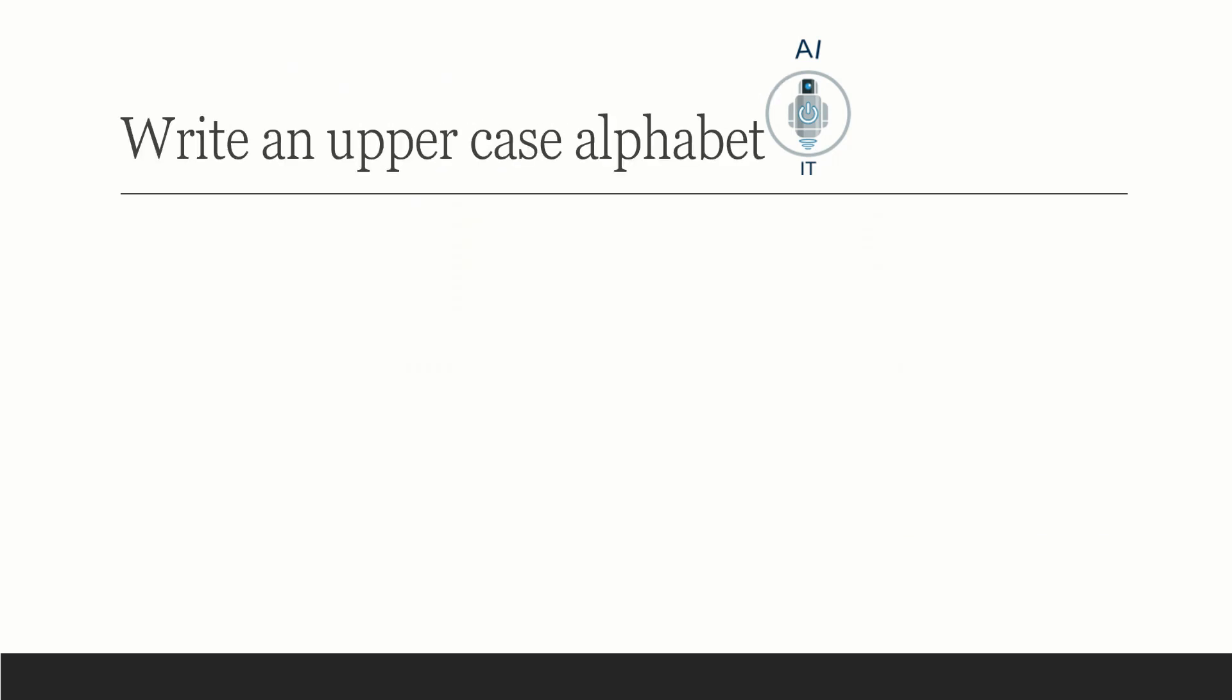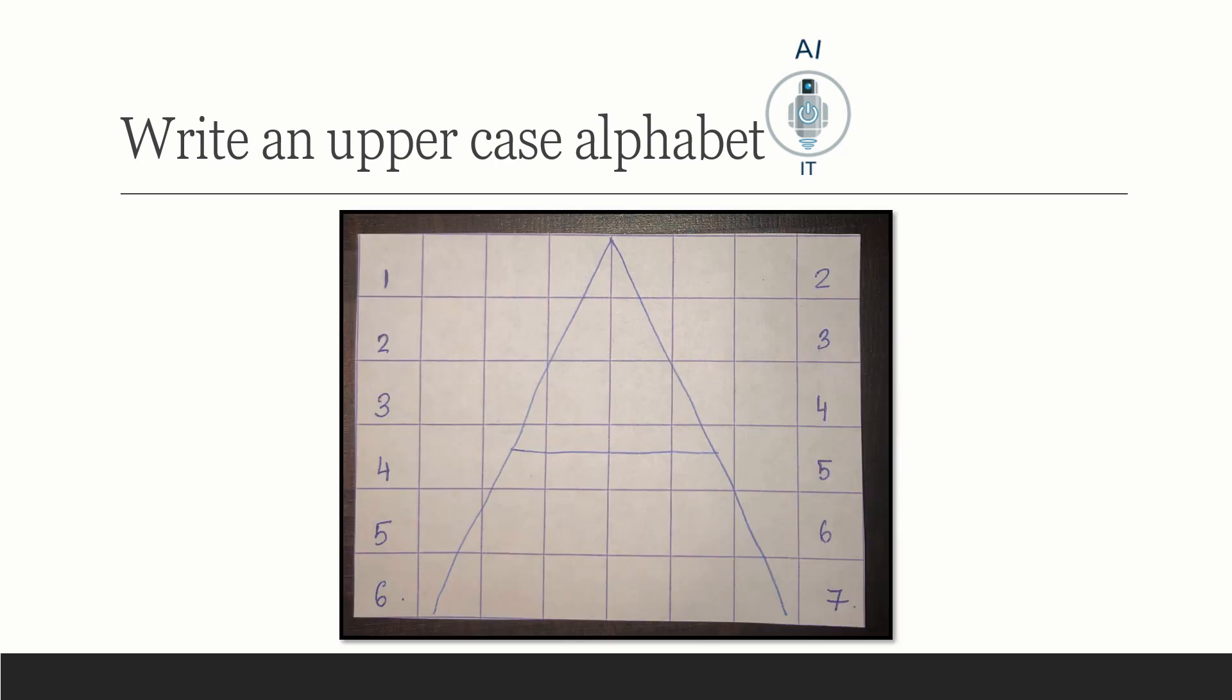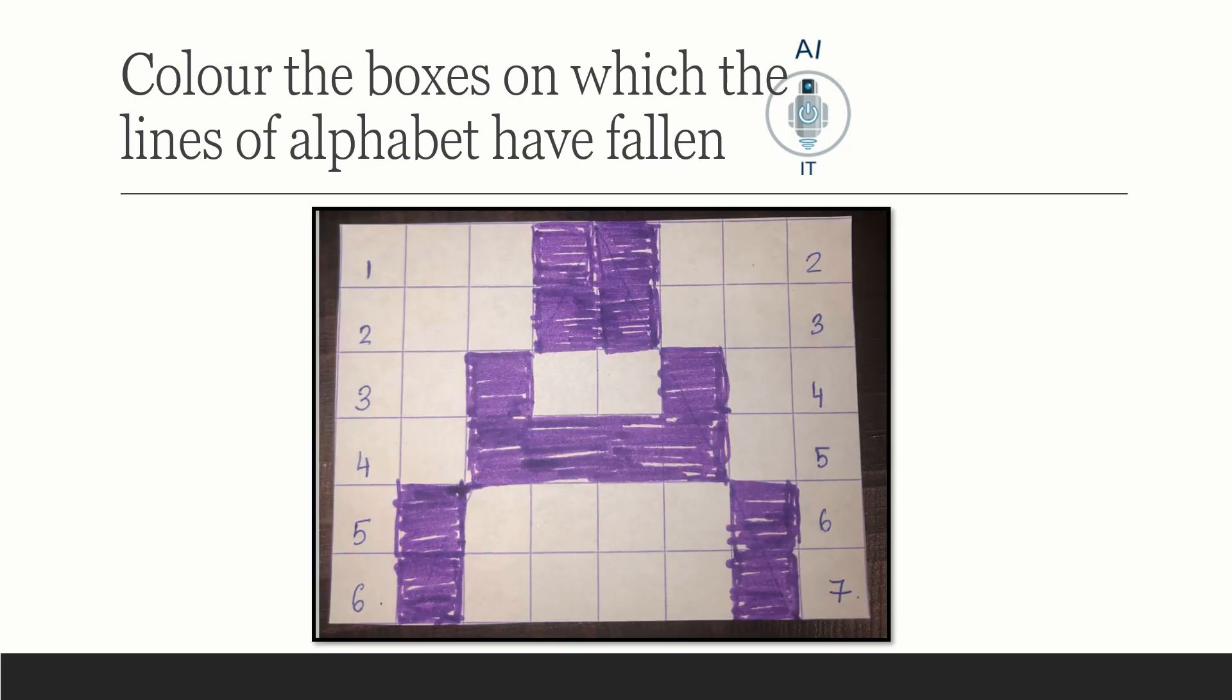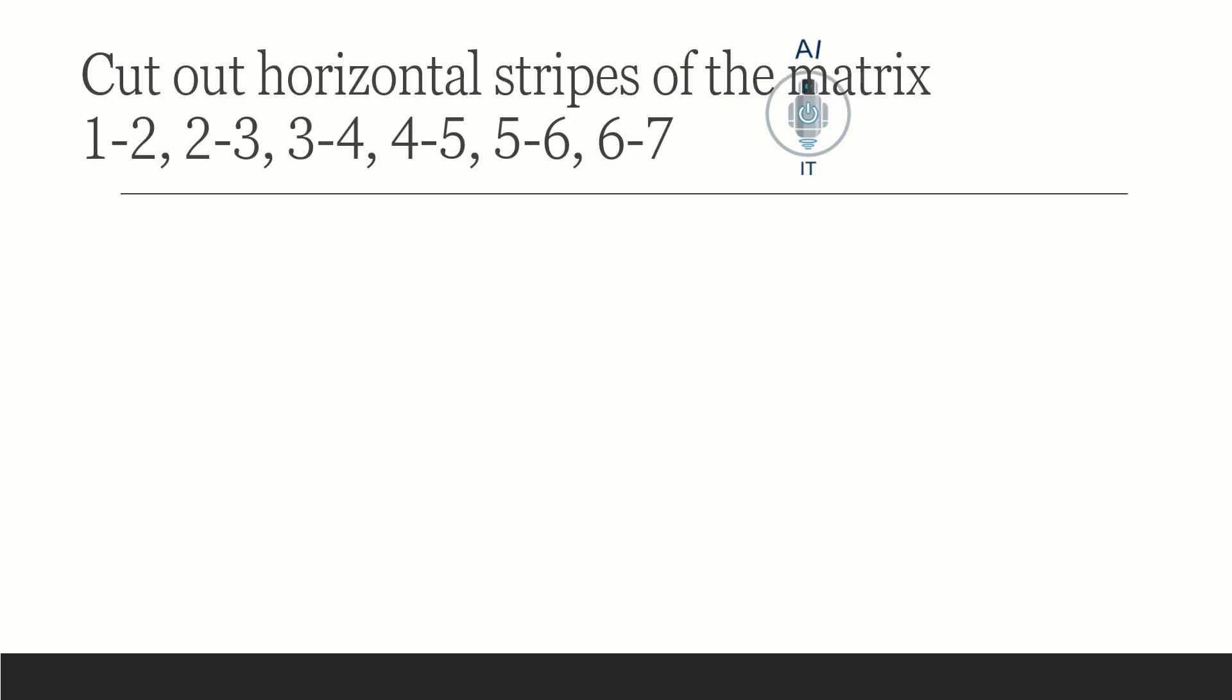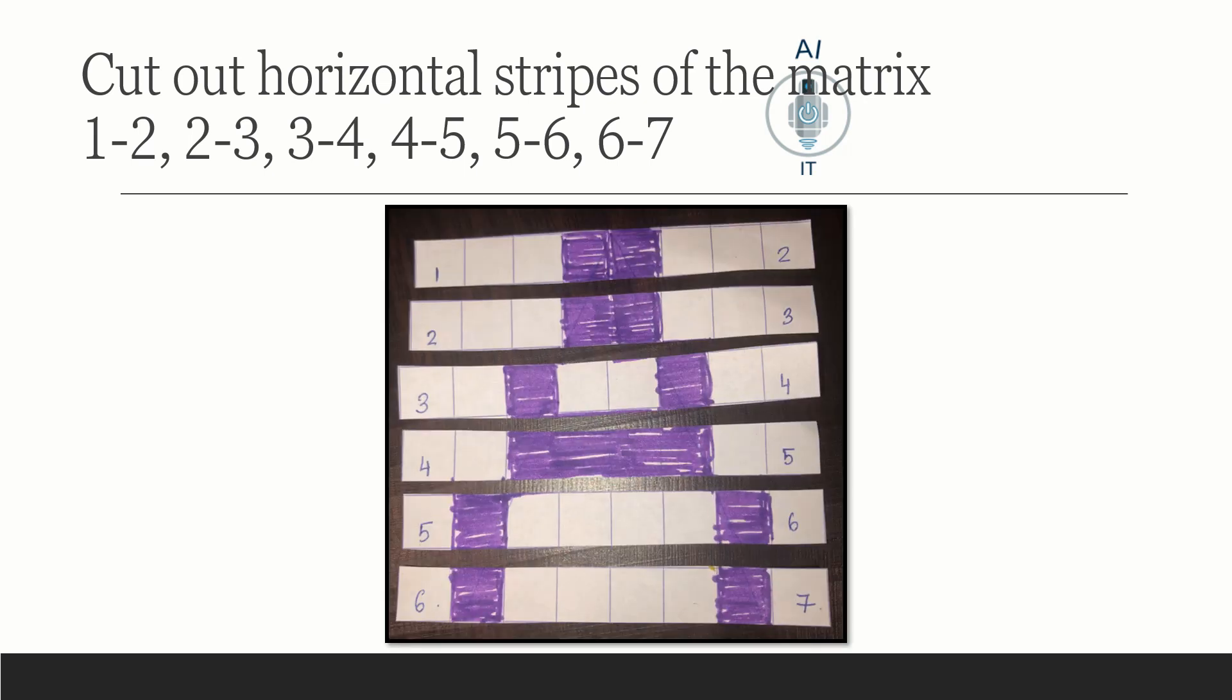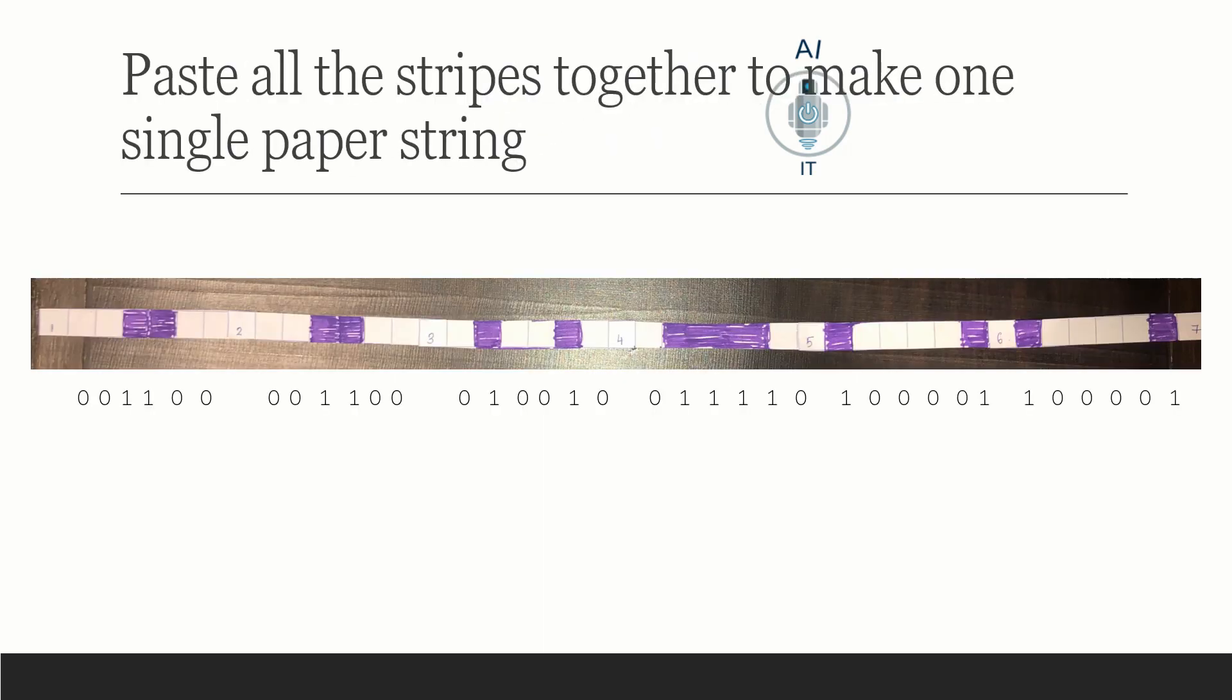I have done this for the same alphabet with a different font style like this. The second step is to color the boxes on which the lines have fallen, and once this is done I have cut out horizontal stripes of the matrix and then pasted all the stripes together to make one single paper string and then decoded it or converted it into a binary digit of 36 digits.